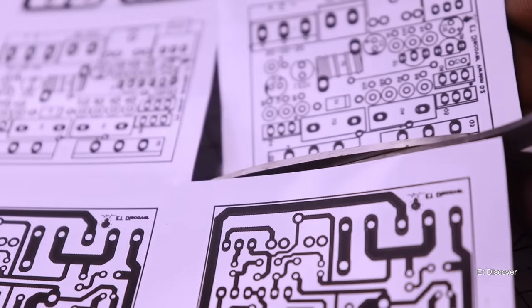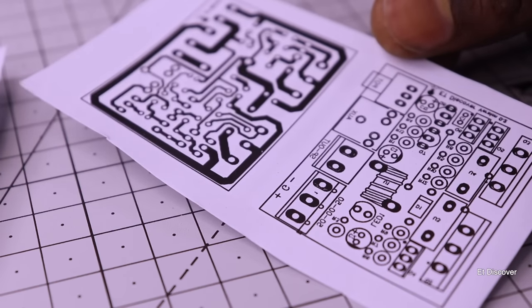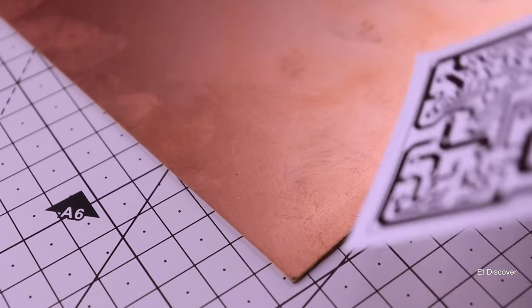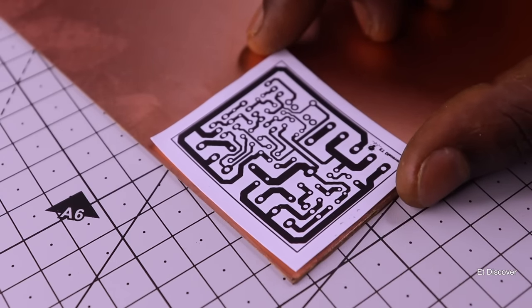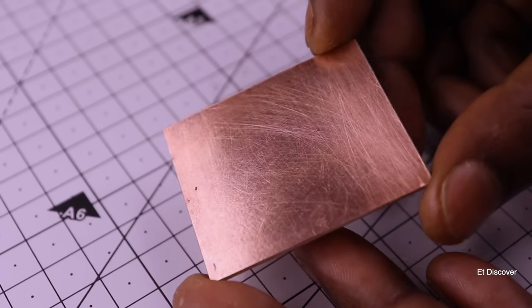And then I will cut the bottom and top layer from this paper. Next I am going to use this type of copper plate here to make my PCB. It is pretty good - I cut as much as I need it from here.